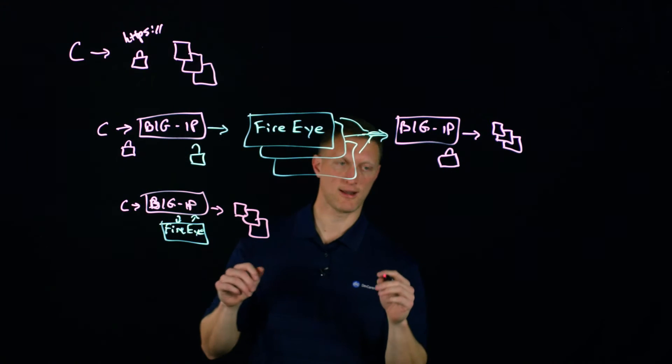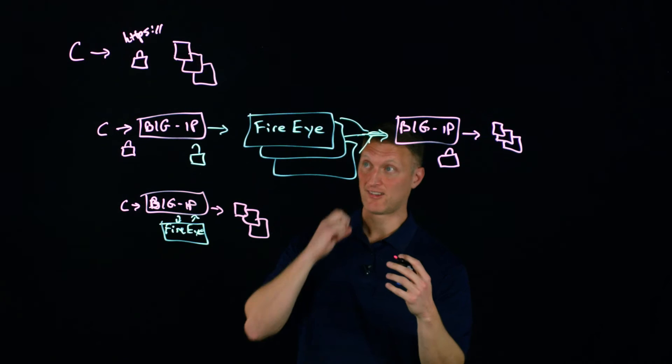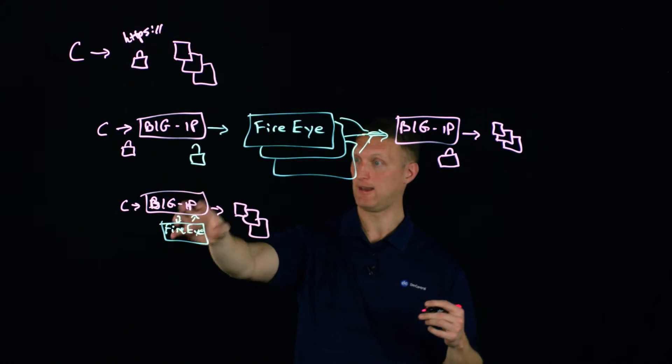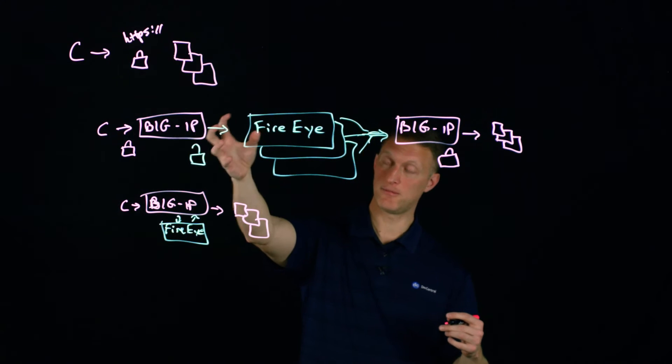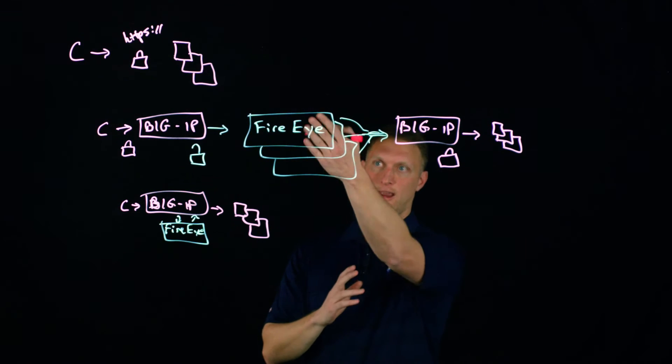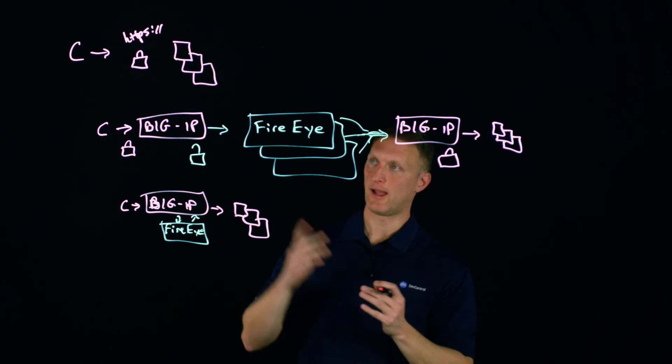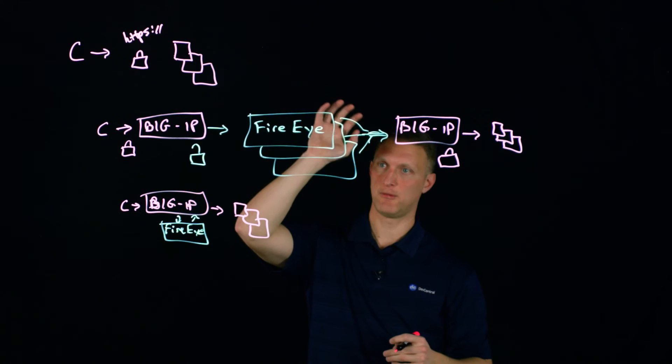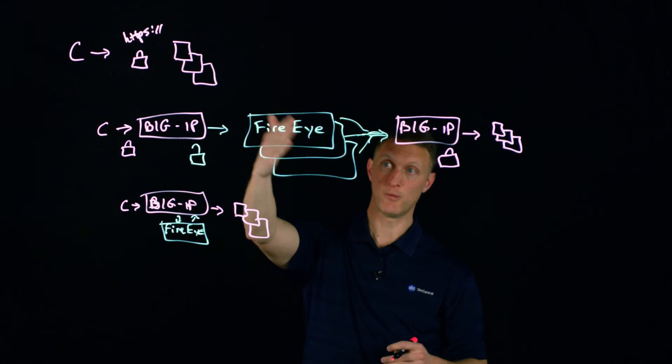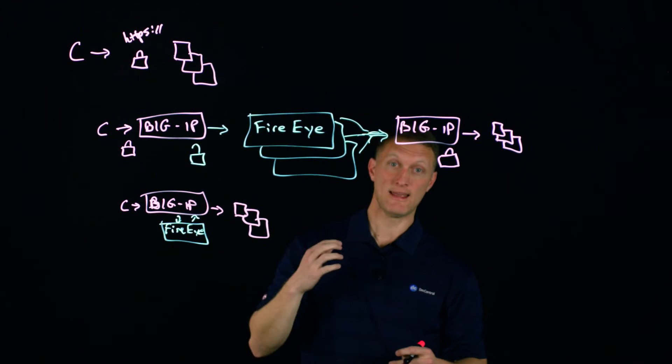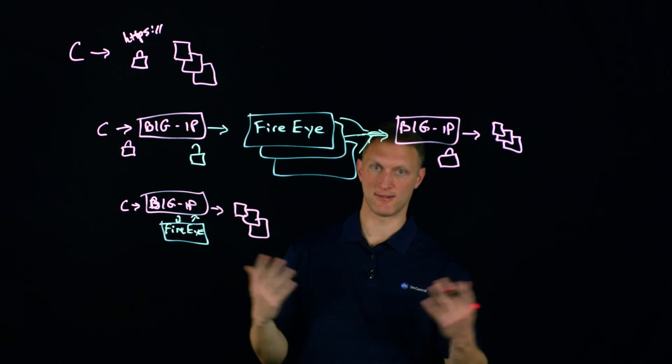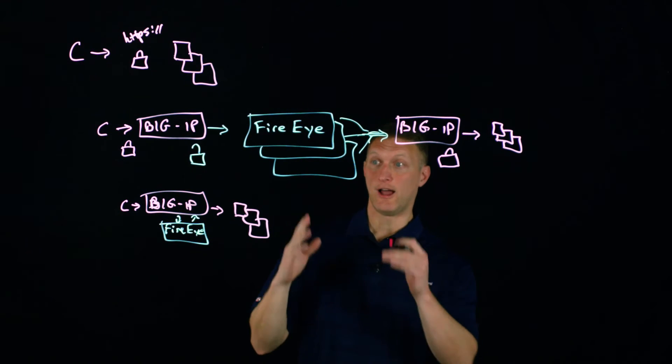A couple of things that are cool about the BigIP being able to do this is that the BigIP knows the status of the FireEye servers. If you have a pool of FireEye devices, the BigIP is going to know if one of these is really bogged down at the time or maybe offline. The BigIP has the intelligence to know which one is available and which one's not, and can intelligently load balance to the different FireEye devices as needed.